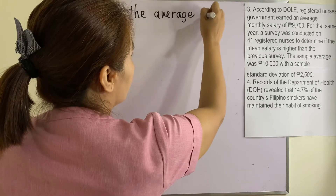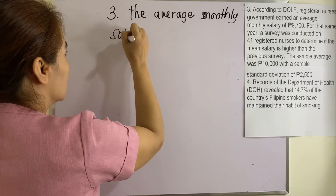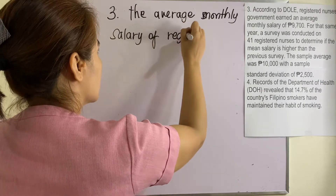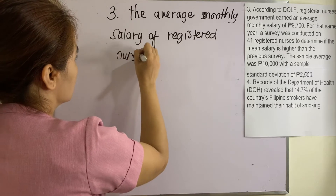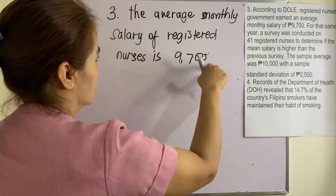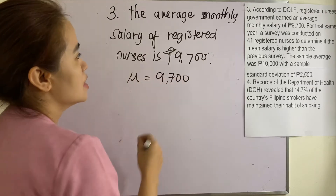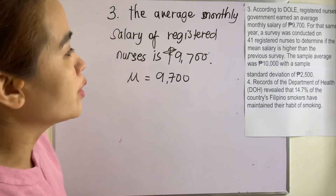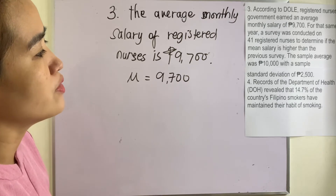The average monthly salary of registered nurses is μ = 9,700. That is the population mean. Example number four: records of the Department of Health (DOH) revealed that 14.7% of the country's Filipino smokers have maintained their habit of smoking. So this one is of course a proportion.